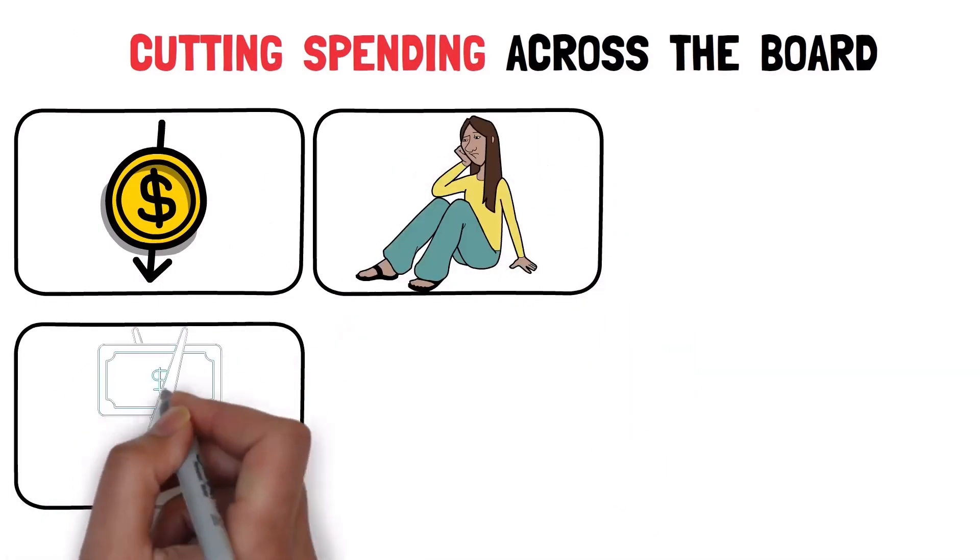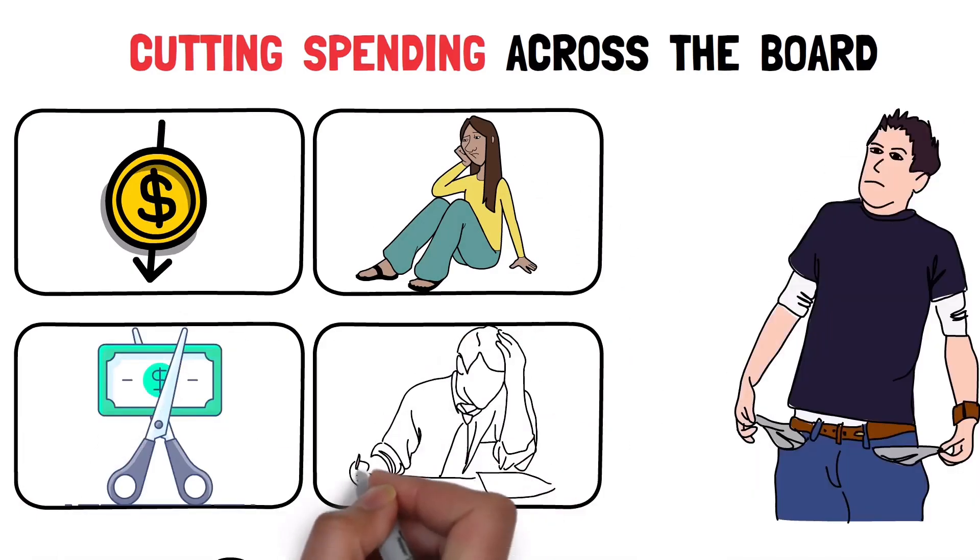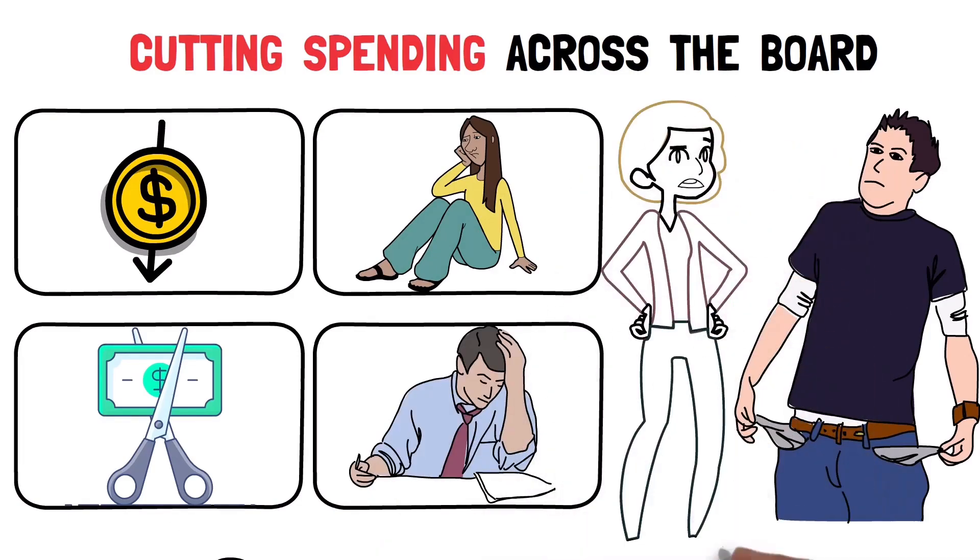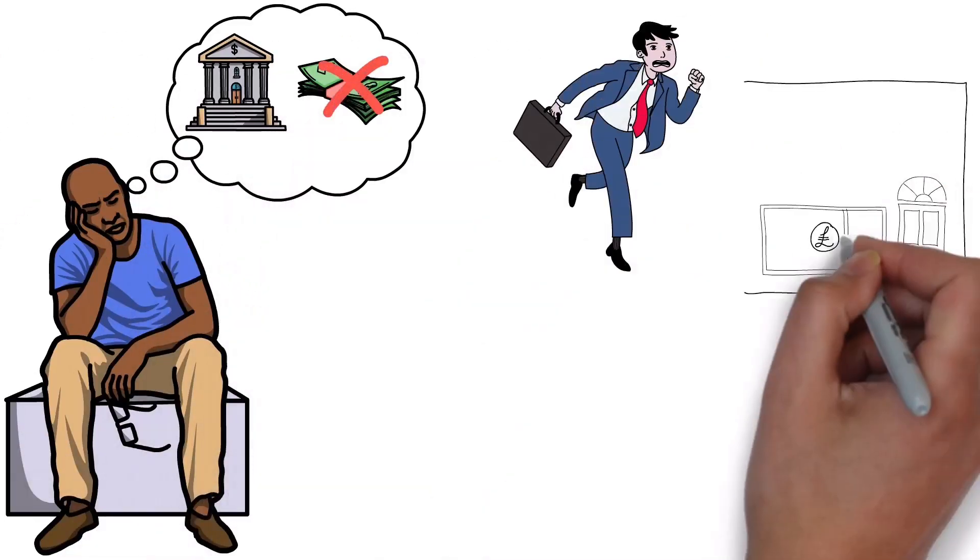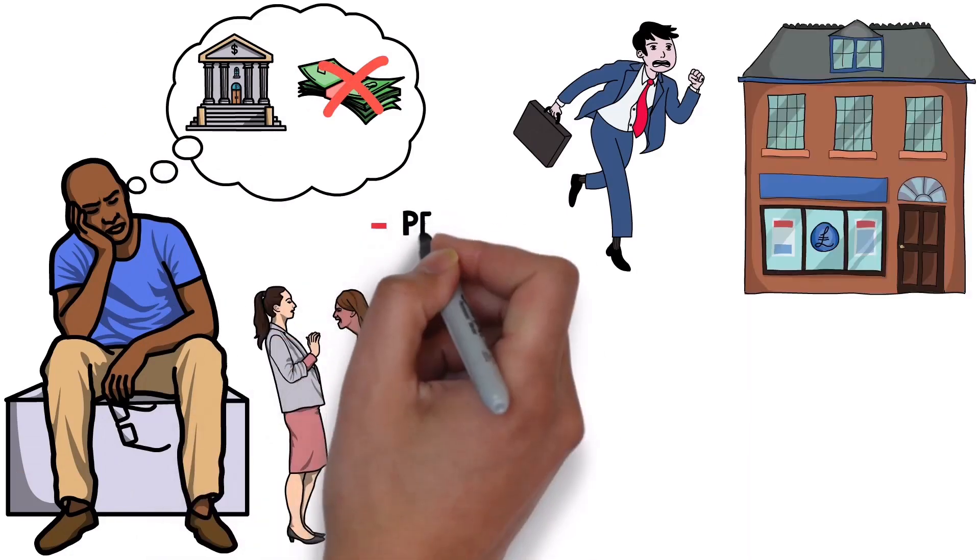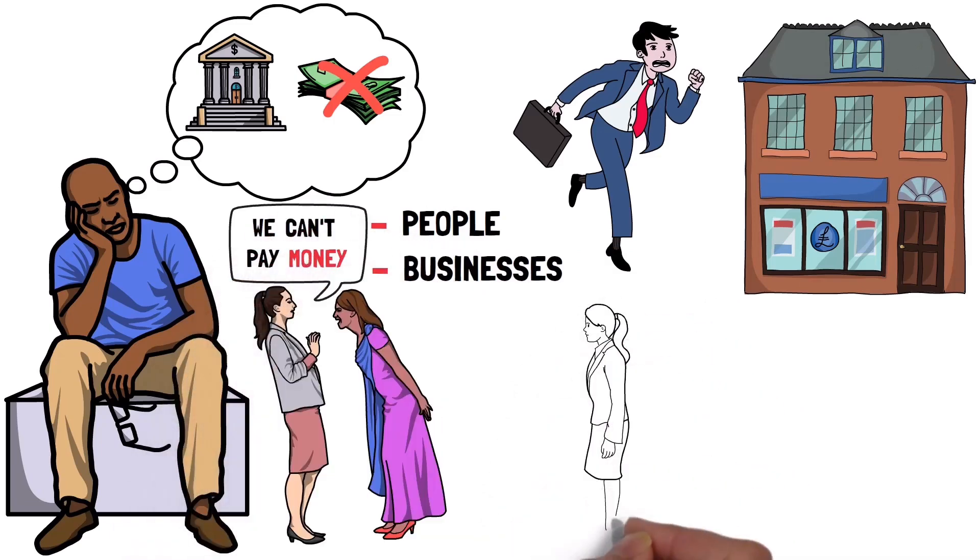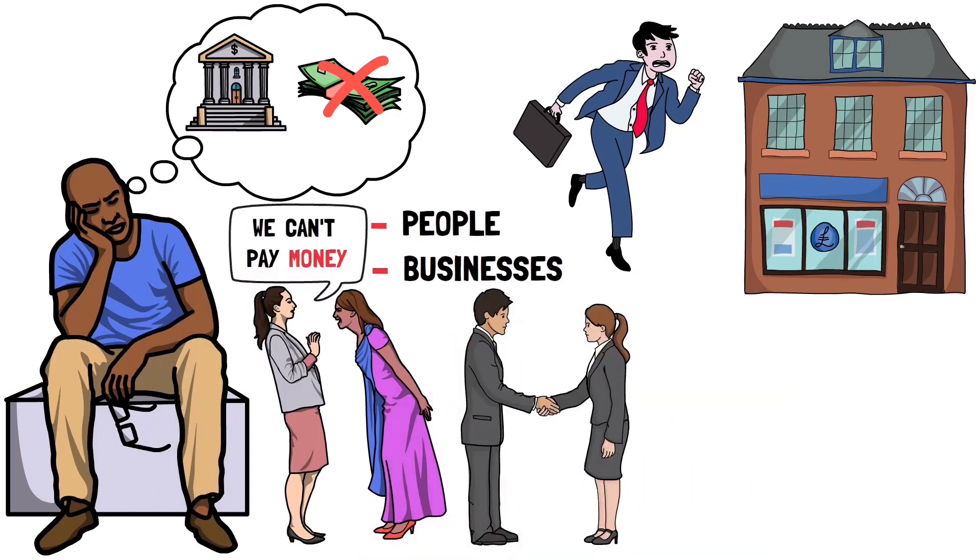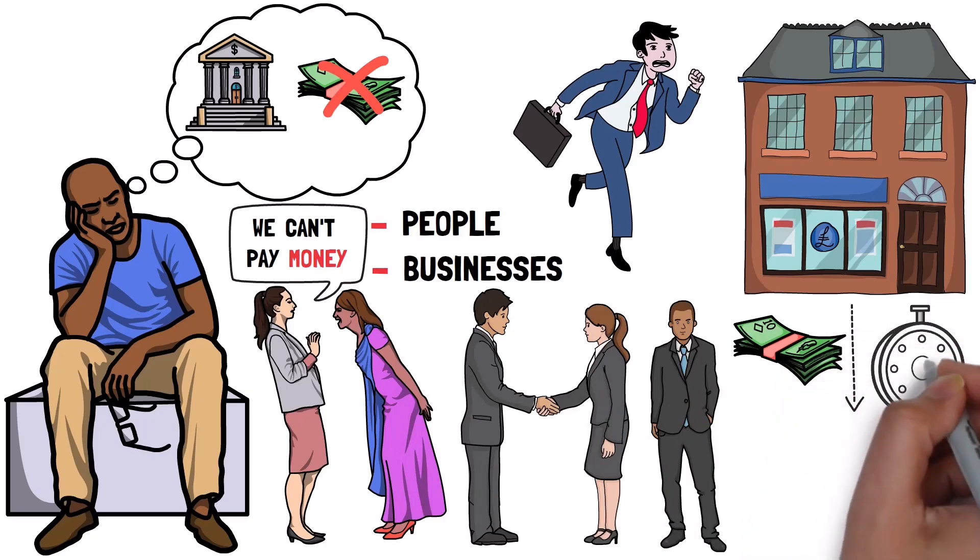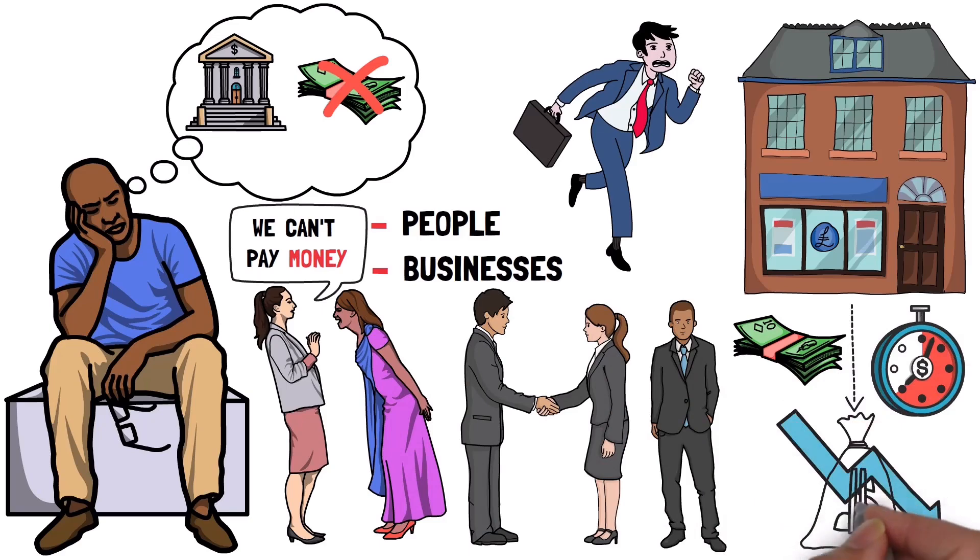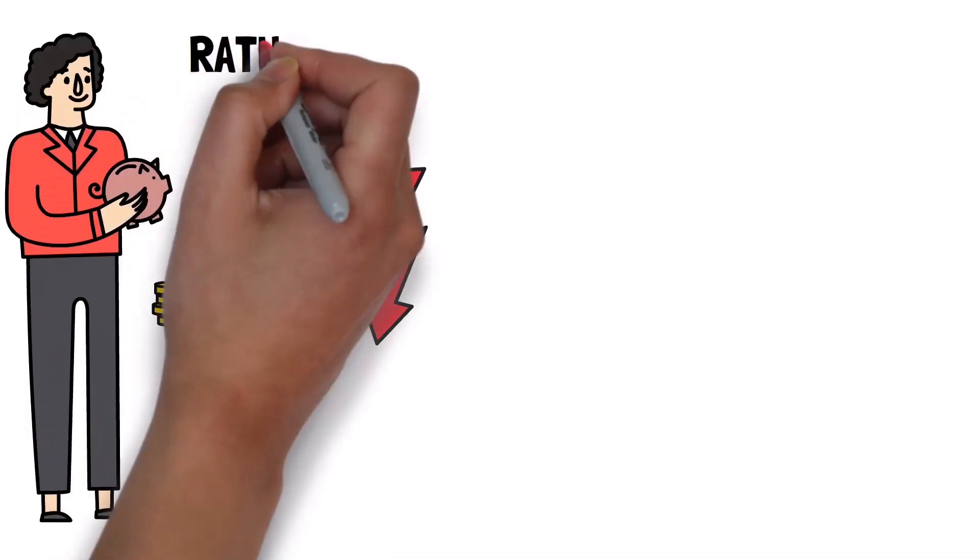So, the next step is to reduce debt. Many borrowers can't pay back what they owe, and when they can't repay their loans, it becomes a problem for the lenders who gave them the money. People start to worry that the banks won't have enough money to give back to them, so they rush to take their money out of the banks. This puts pressure on banks, and some people, businesses and banks can't pay their debts. To solve this, lenders often agree to restructure the debt. Debt restructuring means that lenders get back less money or get repaid over a longer period of time or at a lower interest rate than originally agreed upon. It's a way to reduce the debt burden. Lenders prefer to get something rather than nothing.